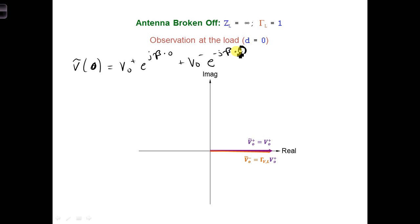We can draw each of these vector phasors on the complex plane shown here. Purple here is for the positive phasor, and orange is for the negative phasor. They both have a phase of zero, and so they are aligned with the real axis.